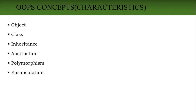Class is nothing but it is a collection of objects, or it is a template of objects. We also say it is a blueprint using which we are creating new objects. An object is the instance of the class, and the class is the template or blueprint using which we create the object.